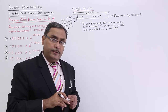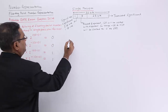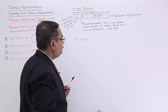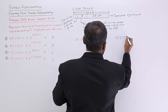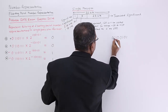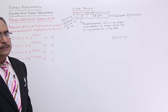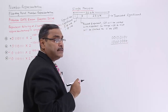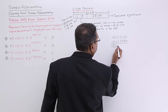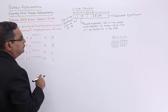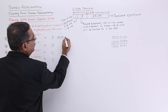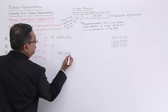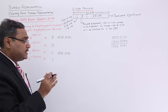Next is the biased exponent. The exponent is 1 0 0 1 0 1. Writing that in 8-bit format: 0 0 1 0 0 1 0 1. For the biased exponent, we add 128, which is 1 followed by 7 zeros. After adding 128, the biased exponent becomes 1 0 1 0 0 1 0 1. Since the exponent was positive, the result is greater than 128, so the leading bit is 1.